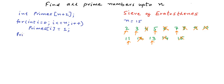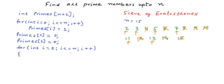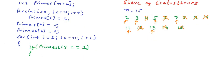We know that 0 and 1 are not prime, so after the initialization loop we set primes[0] = 0 and primes[1] = 0. Now we run a loop from 2 to n and write the striking-off logic. If primes[i] is 1 — meaning i is prime — we need to set all the multiples of i to 0, marking them as not prime.